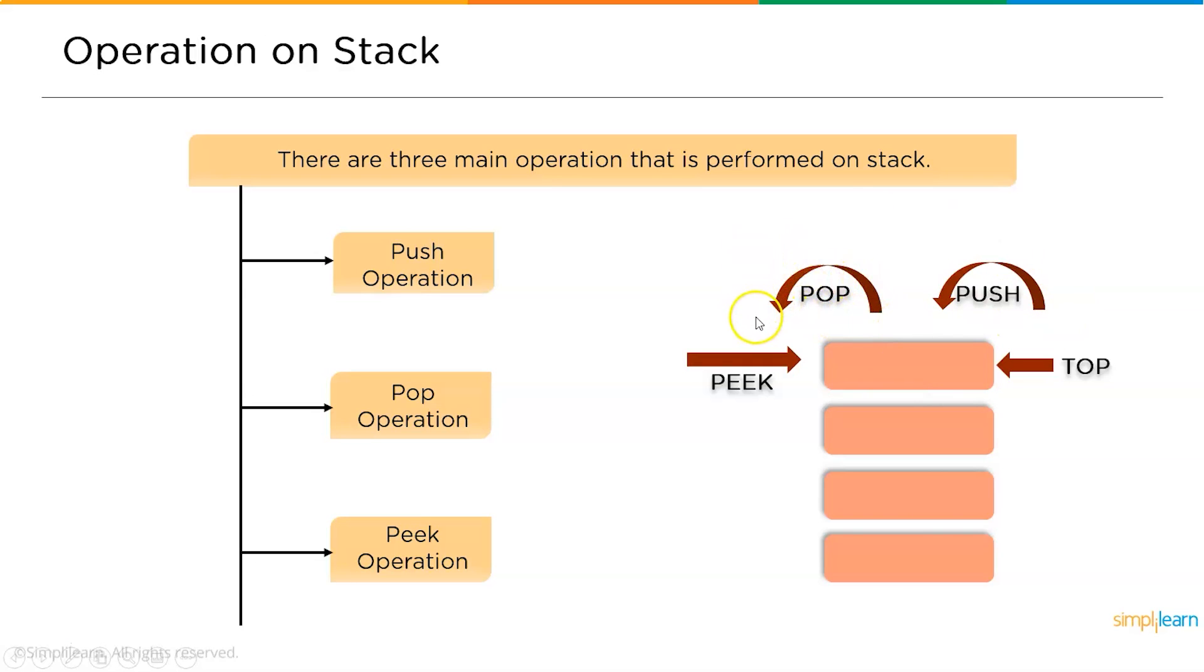Apart from these two - push and pop - we have another operation called peek. The main intention of peek is just to see the element which is on the topmost part of the stack. It will just retrieve the element from the top. It will not pop it or push any other element onto the top. It will just copy and print what is present on the top. So these are the main operations: push, pop, and peek.